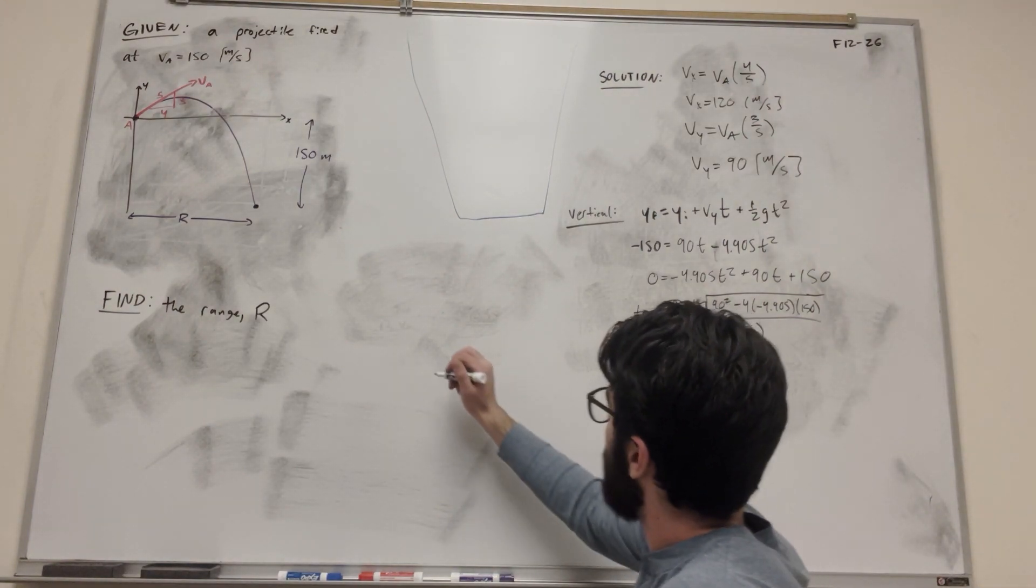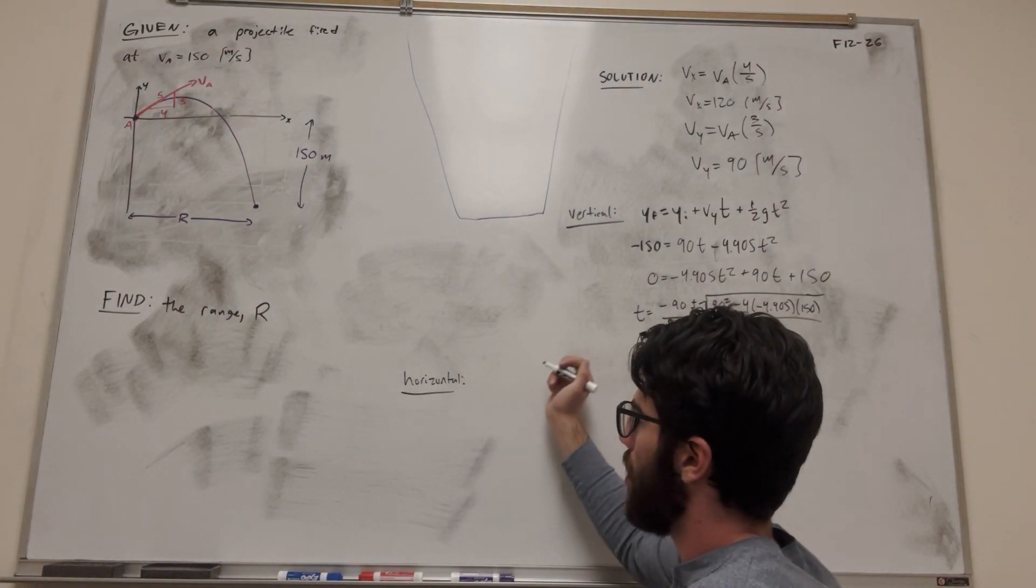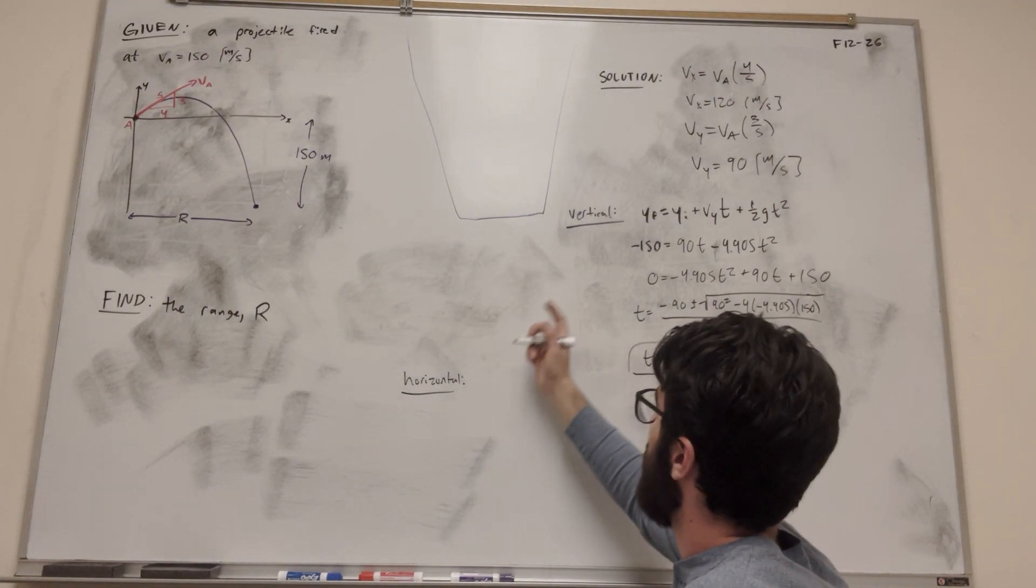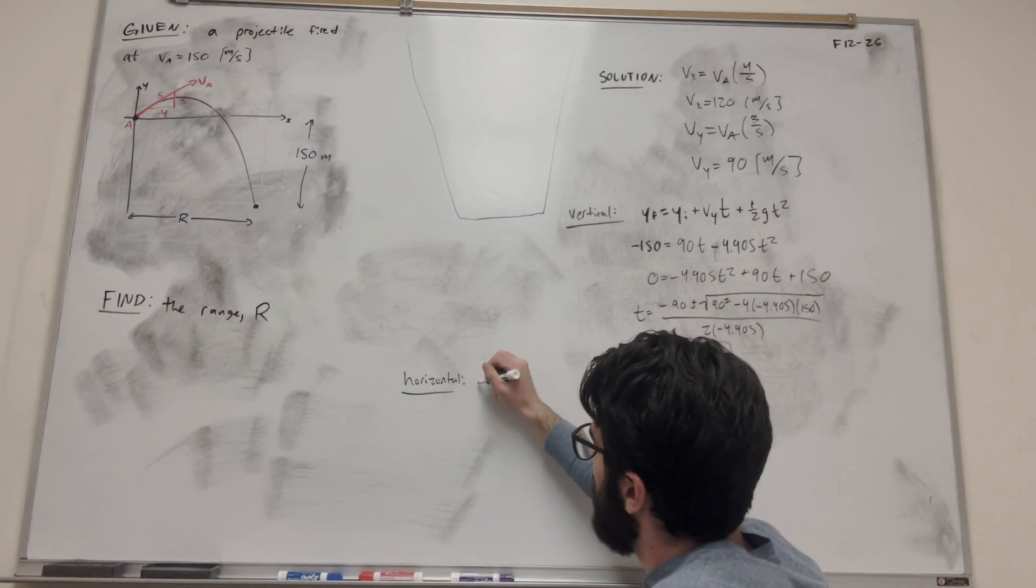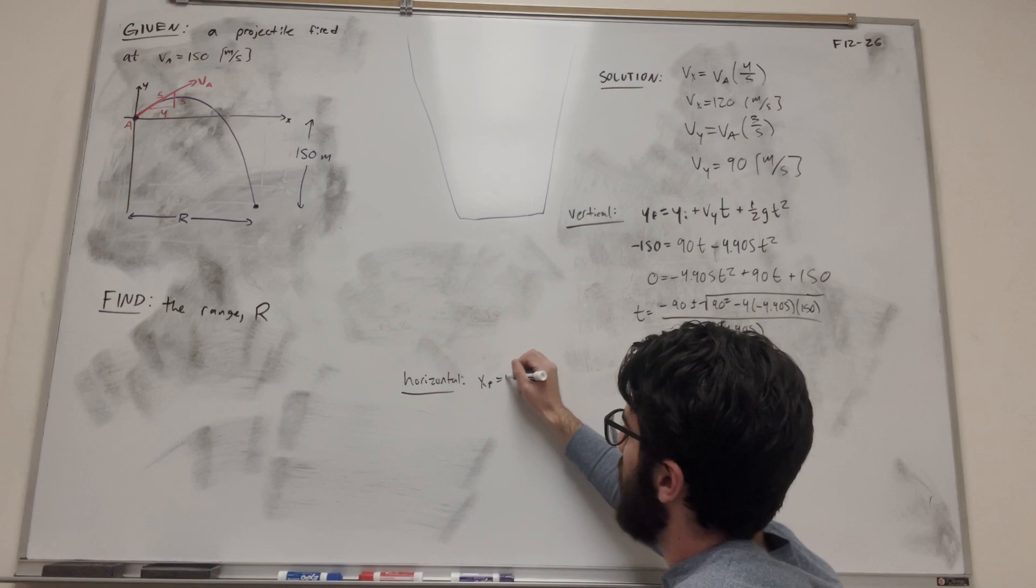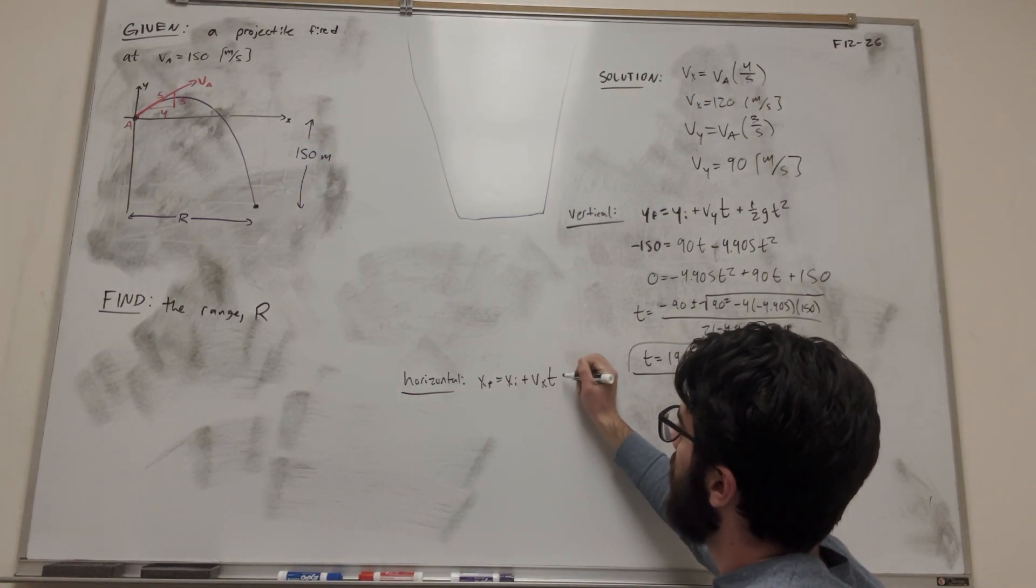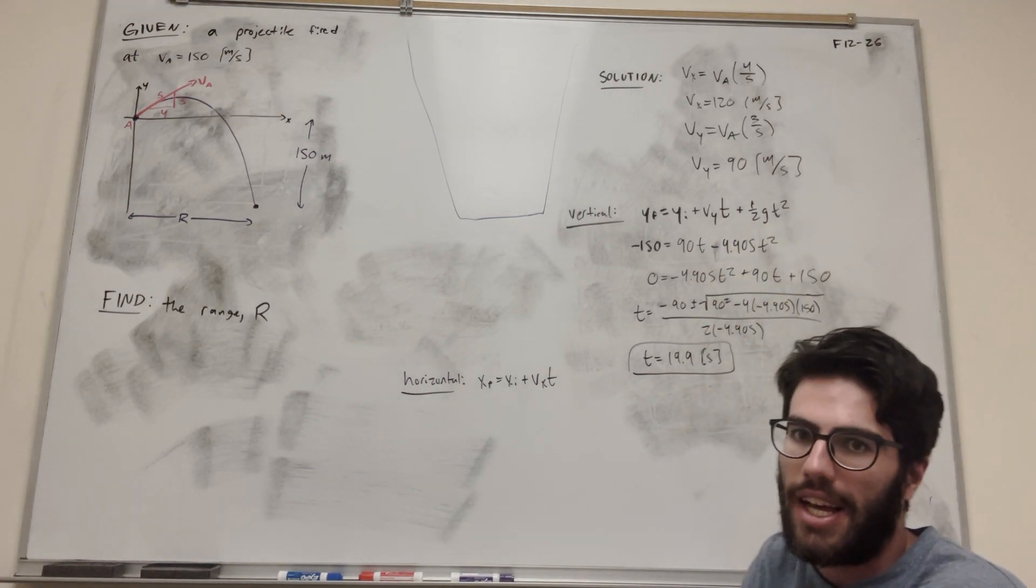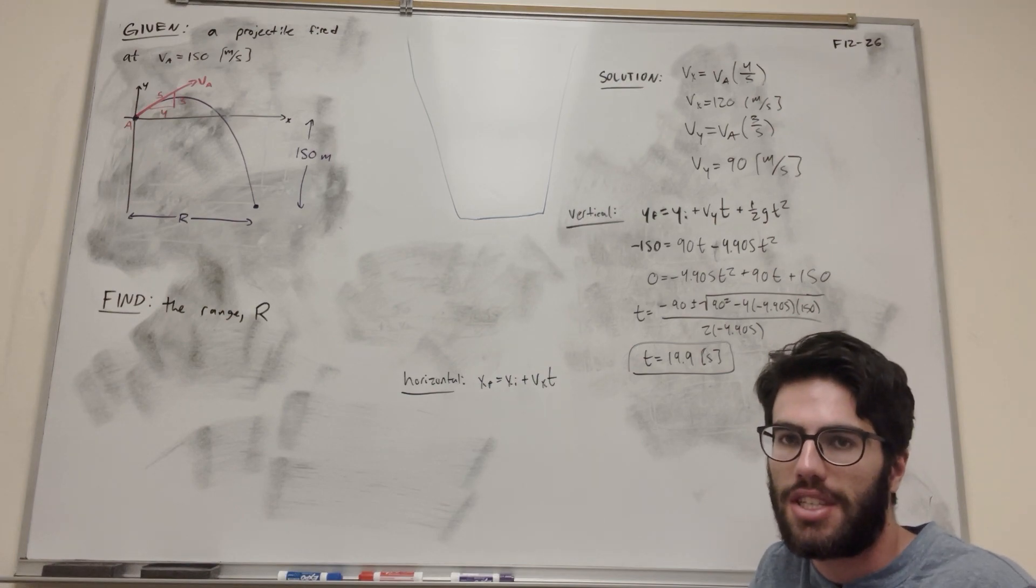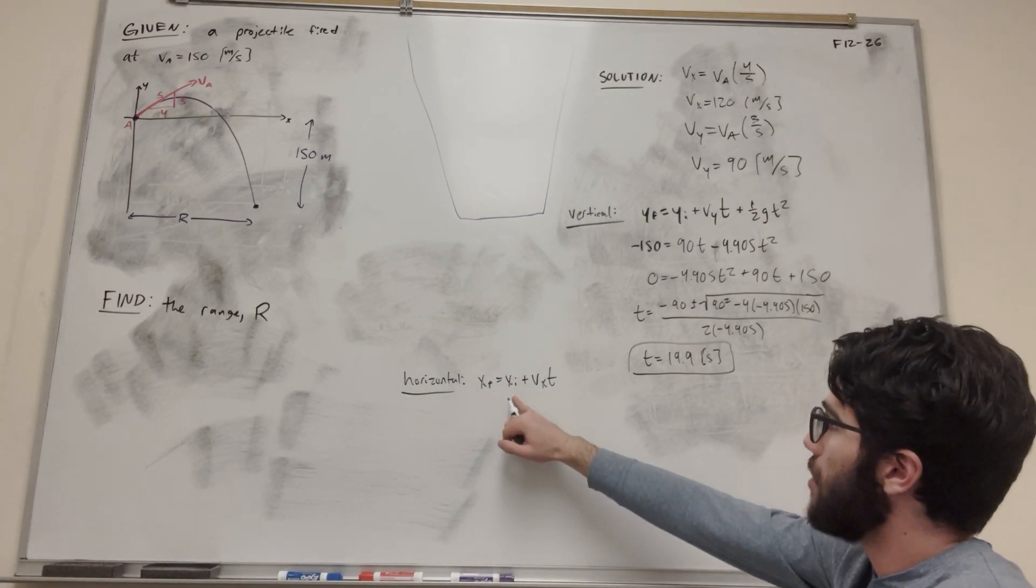So now let's look at horizontal. So our equation is going to be the same equation I suppose we can use. So it's going to be x final is equal to x initial plus velocity x time, and then it's going to be the one-half acceleration time squared. But in the x direction, we don't have any acceleration. We're not counting for wind resistance. There's no gravity in the x direction, so that's going to be zero. So we're checking out this equation.